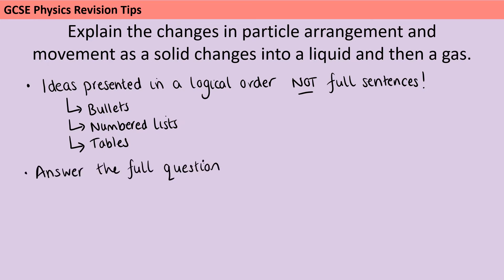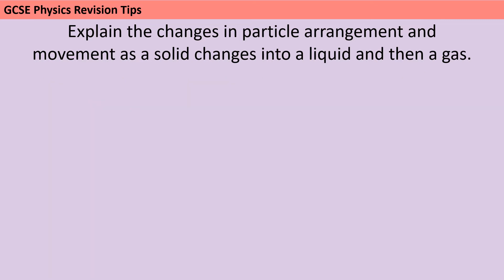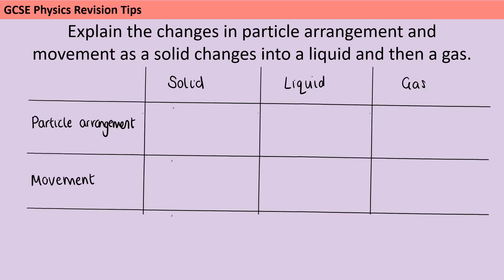Now pause the video and give yourself 6 minutes to answer this 6 mark question. This question is a perfect example of where I would lay my answer out in the form of a table rather than prose, because it's really important that your examiner can clearly see that you've covered both of the aspects of the question and all three states of matter. So the first thing I would do would be to draw a quick table showing that I've covered all six of those things, although I'd leave a bit of space at the bottom to also put in a little bit of description.